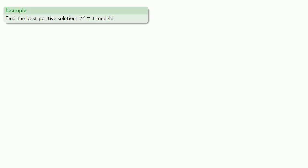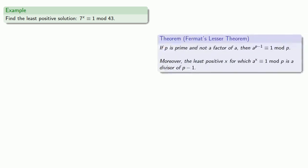This allows us to solve some congruences very easily. For example, let's find the least positive solution to 7 to power x congruent to 1 mod 43. Fermat's theorem does require us to work with primes, and we're in luck. Since 43 is prime, we know that 7 to power 42, one less, is congruent to 1 mod 43.